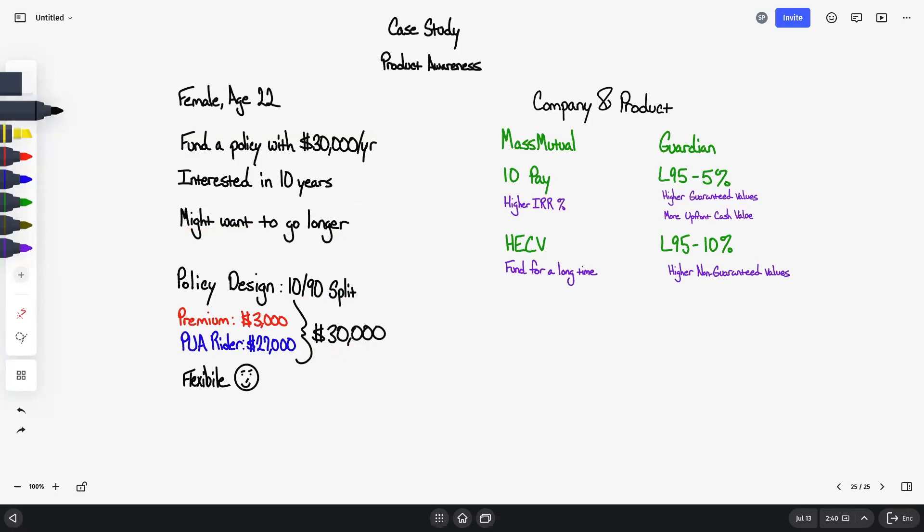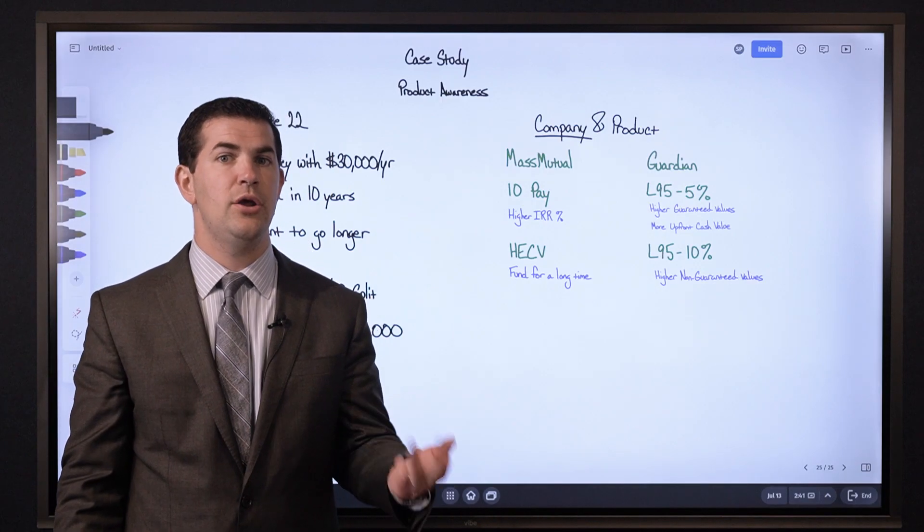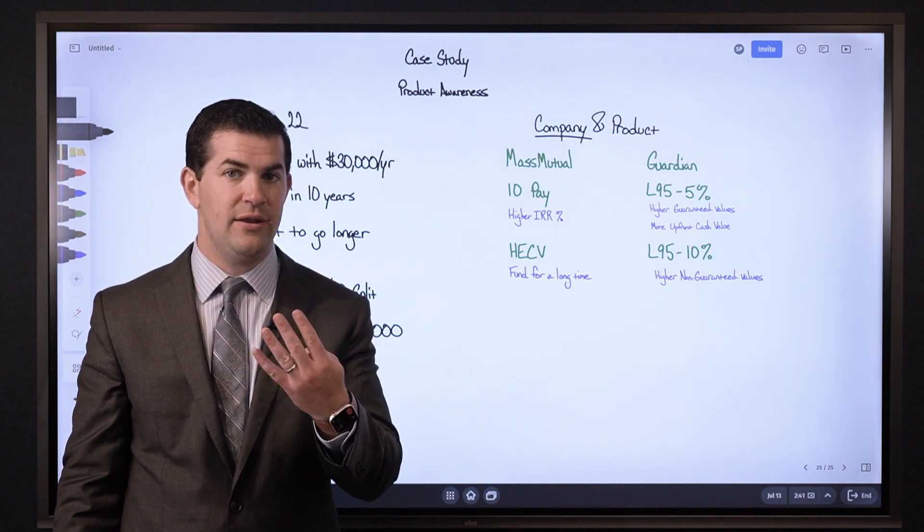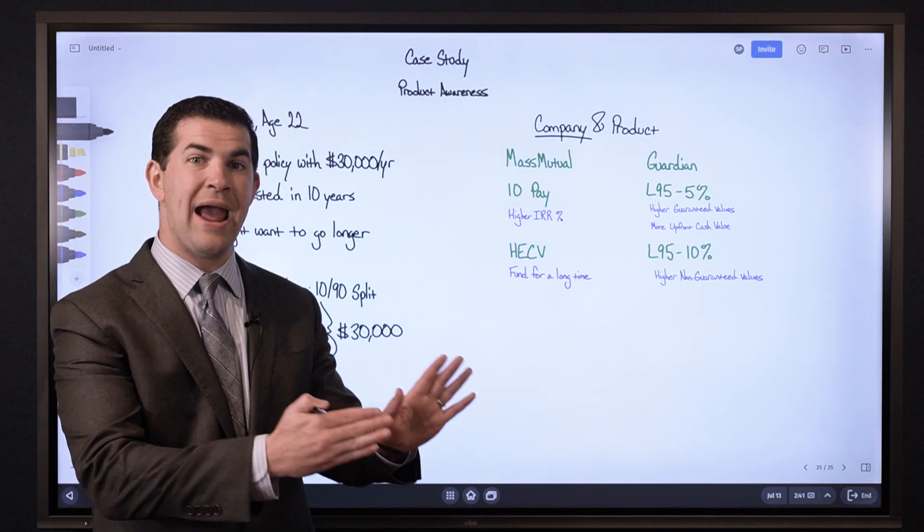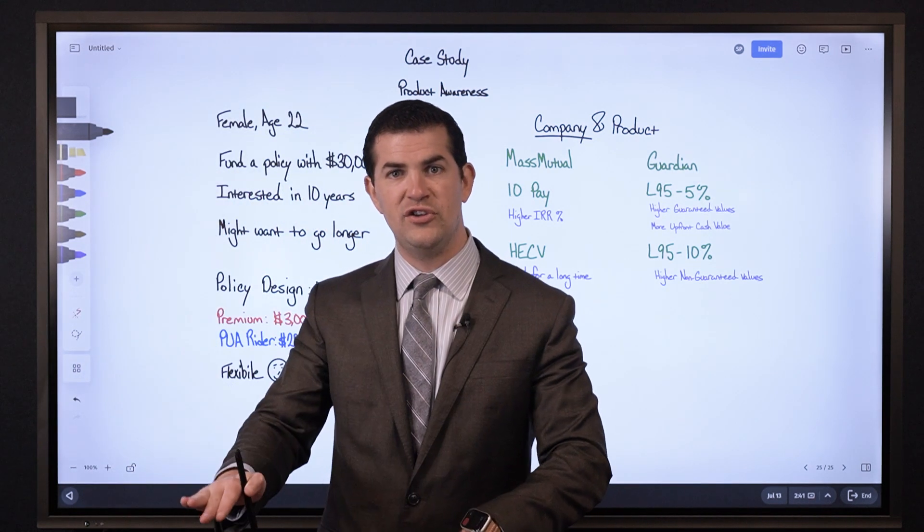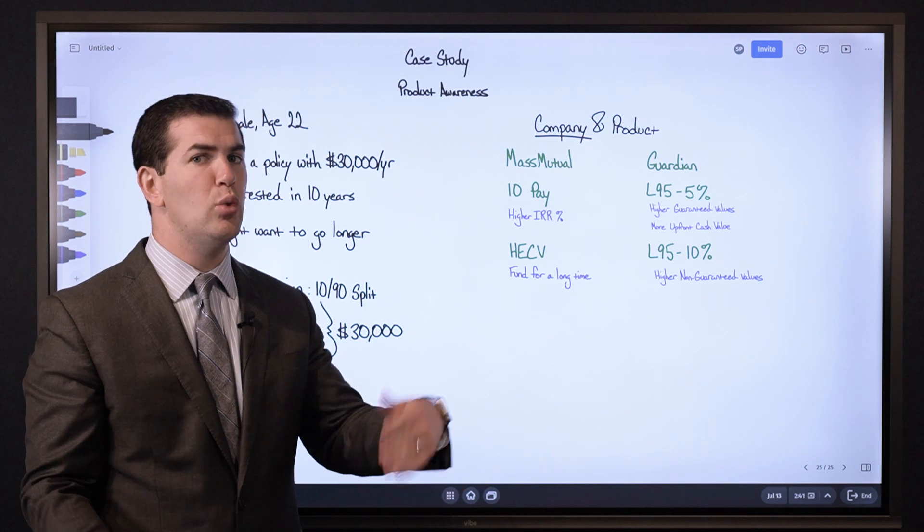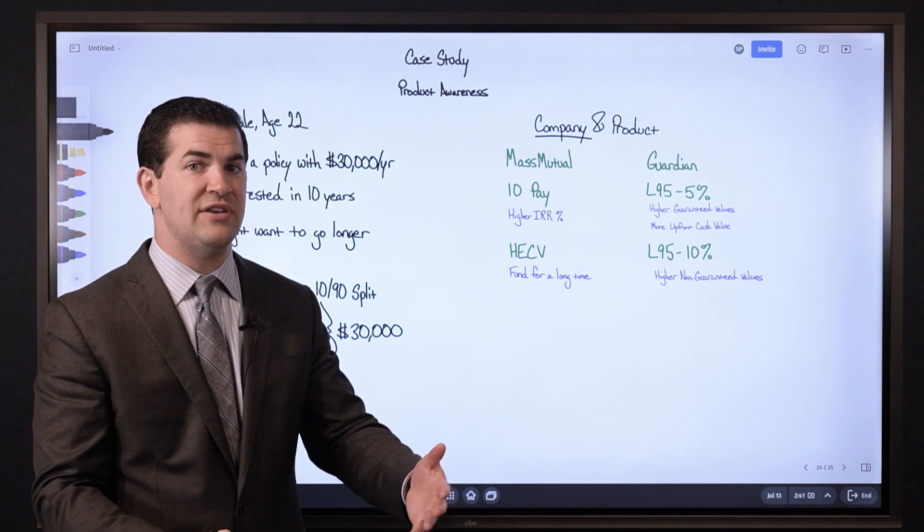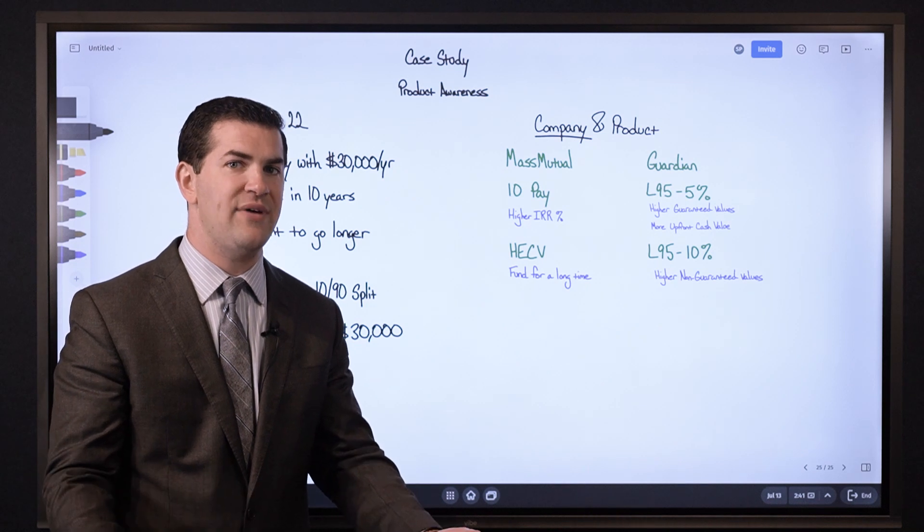When it comes to company selection, the four major mutuals I'm a huge fan of are Mass Mutual, Guardian, New York Life, and Northwestern Mutual. I'm a huge fan because when you look at actual policies, actual performance not just illustrations but what has actually happened, we've seen consistent proof from them where the policies have delivered strong actual cash values.